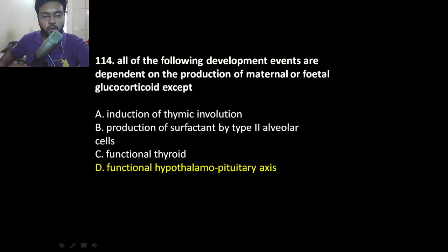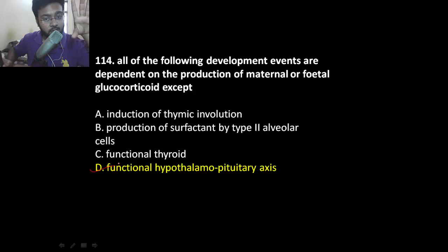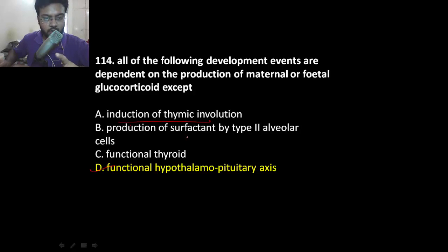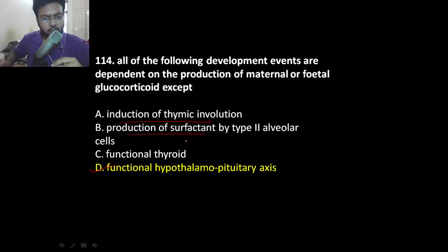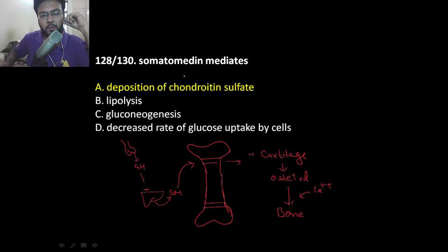For the next five slides, questions are randomly picked from the endocrine system. The first MCQ: all of the following are dependent upon glucocorticoids except — after identifying the exception, you should learn the other three true functions. Glucocorticoids help in thymic involution (shrinkage of the thymus), production of surfactant by type 2 alveolar cells — that is why dexamethasone is given to the mother in suspected premature delivery.